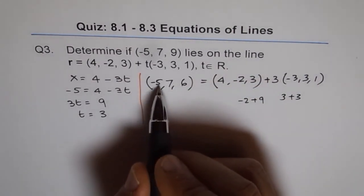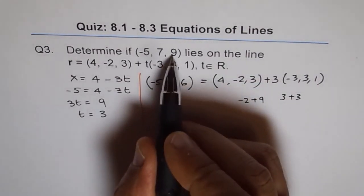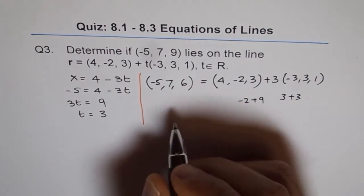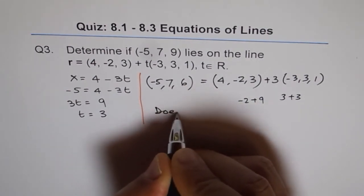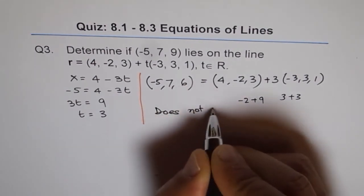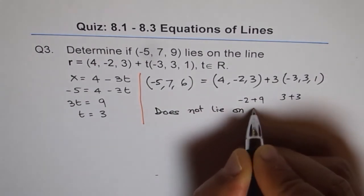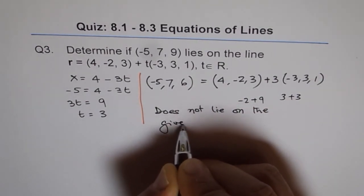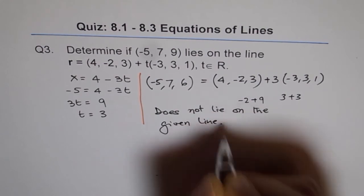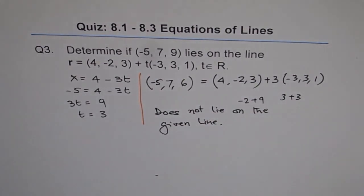So we actually get (-5, 7, 6) not 9, so this point does not lie on the given line. That's how we can confirm. Thank you.